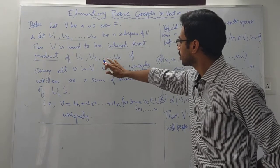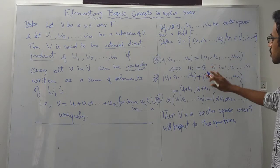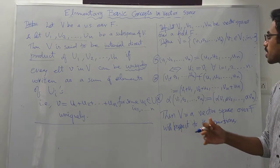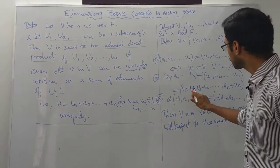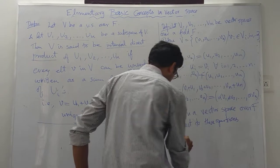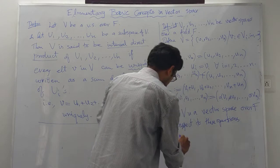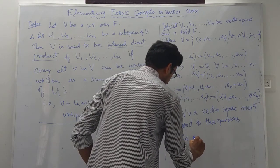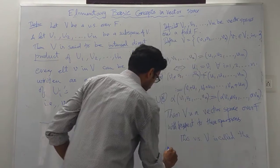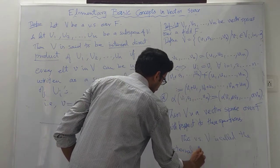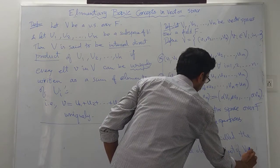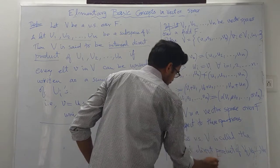The internal direct product is defined. The external direct product — this vector space V is called the external direct product of V1, V2, etc., Vn. This vector space V is the external direct product of V1, V2, etc., Vn.